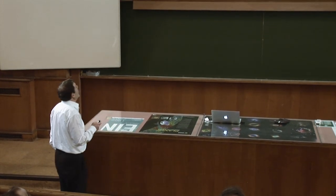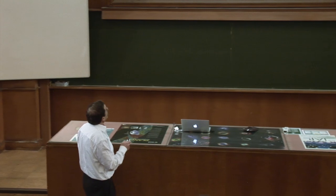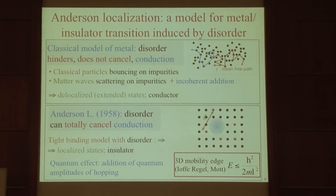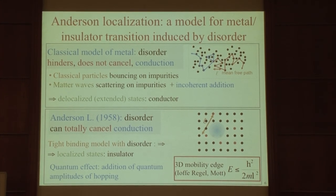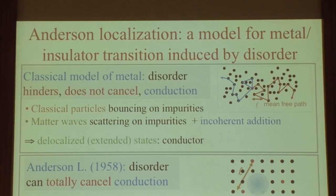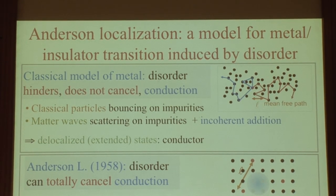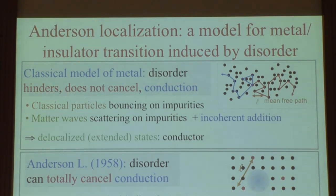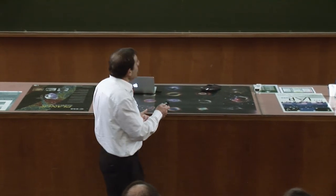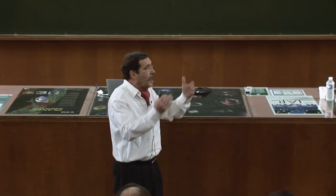Le problème est le suivant : c'est le problème de la conduction dans un métal. Le modèle de Drude classique, c'est des électrons qui font une trajectoire aléatoire en rebondissant sur des impuretés, et à partir de ce modèle vous obtenez la loi d'Ohm. Si vous augmentez le taux d'impureté, la conductivité diminue, la résistivité augmente. Mais en aucun cas la conductivité ne va tomber strictement à zéro. Or, il y a des cas observés par les expérimentateurs de la matière condensée, dans des systèmes parfaits à basse température, où la conductivité tombe exactement à zéro.